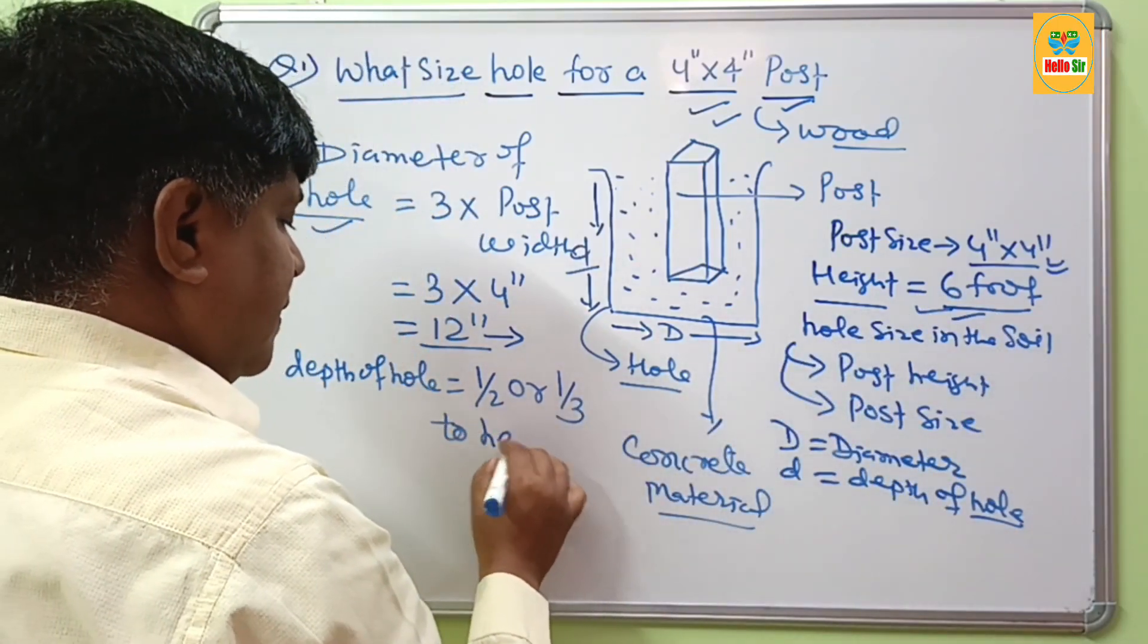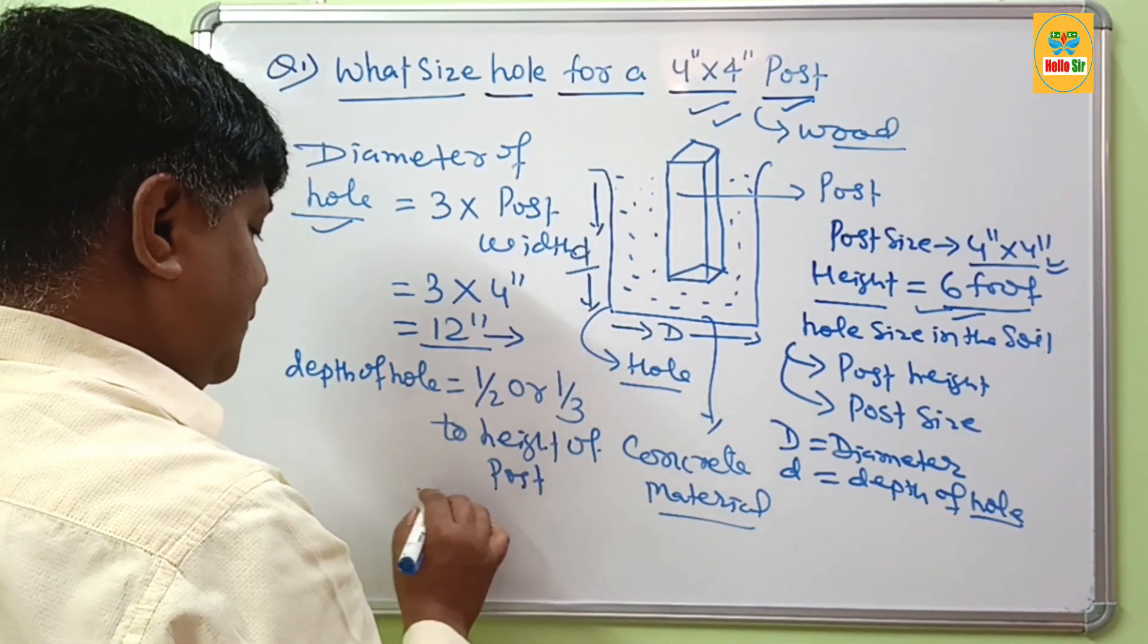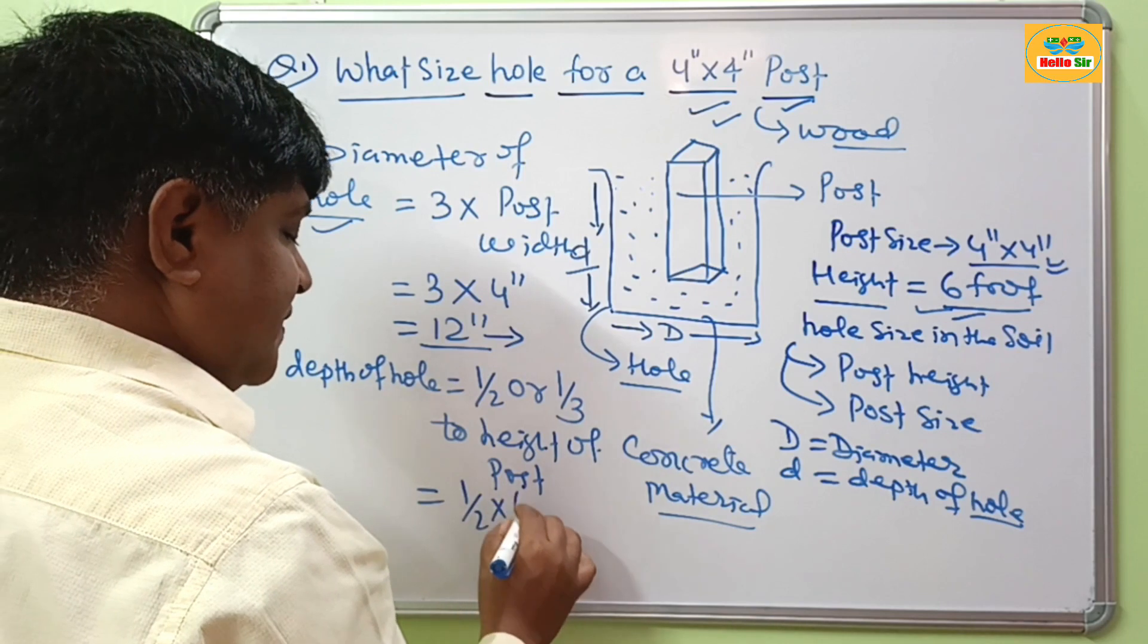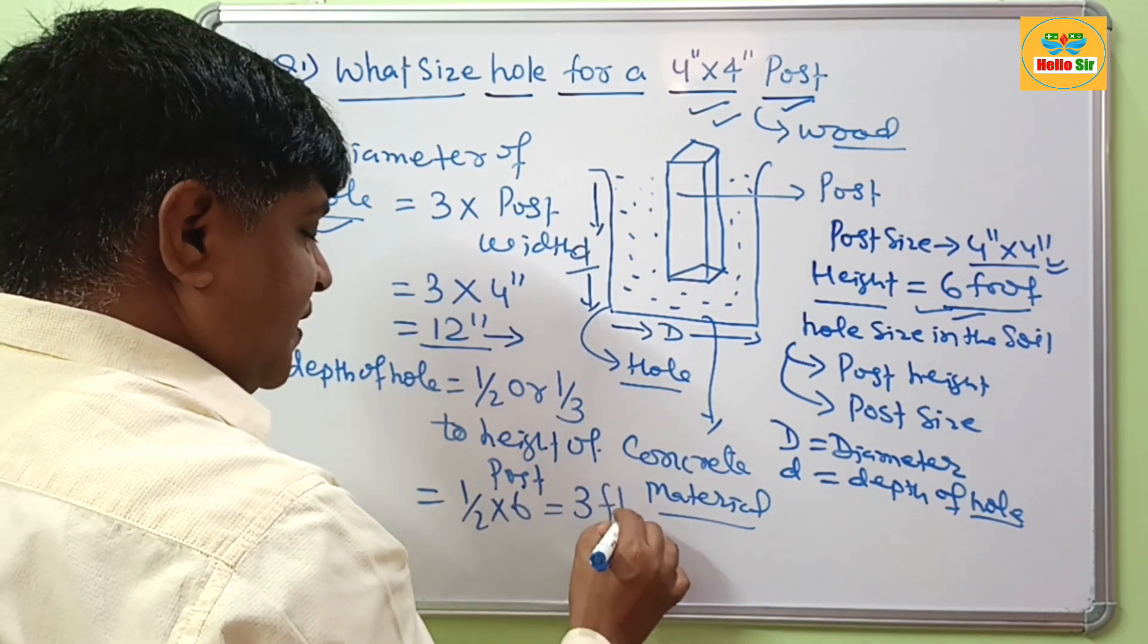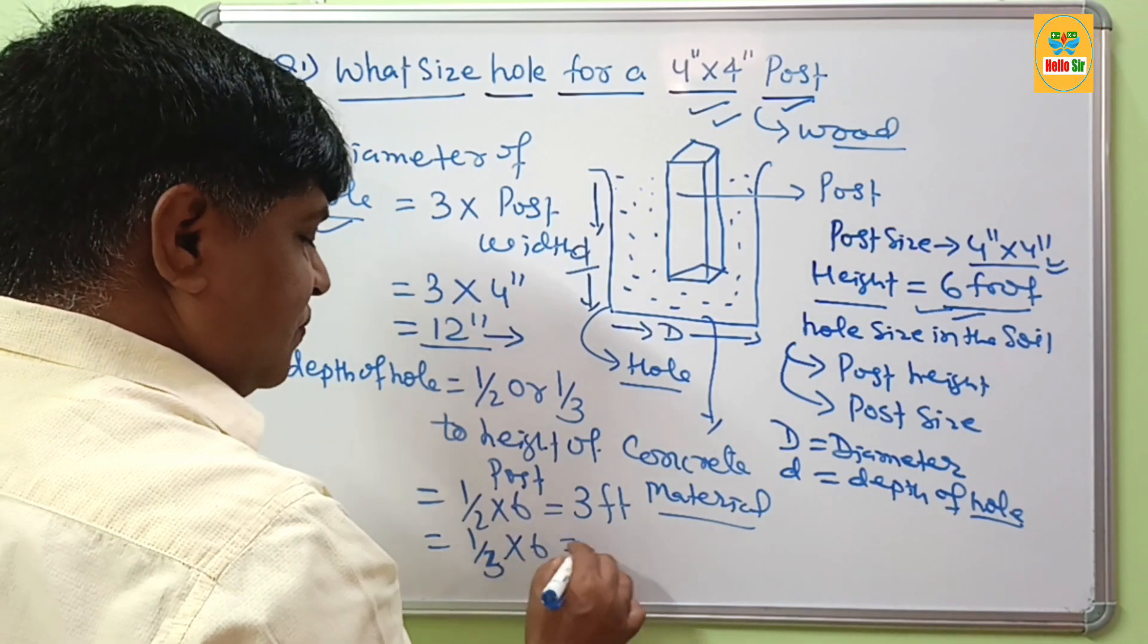Height of the height of the post. And it means if your height is 6 foot, it means 1 by 2 multiplied by 6, this will come 3 feet. And if you multiply with 1 by 3, this will come 2 feet.